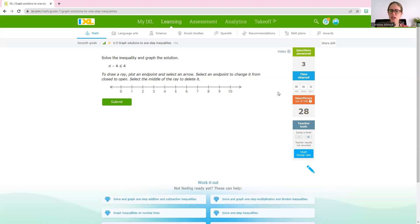All right, let's do just a couple more problems together here. Now we have n minus 4 is less than or equal to 4. We want to solve and get n by itself. We need to get rid of this minus 4. The inverse of subtraction is addition. So we'll add 4 to both sides. Minus 4 plus 4 is 0, leaving us with n is less than or equal to 8.